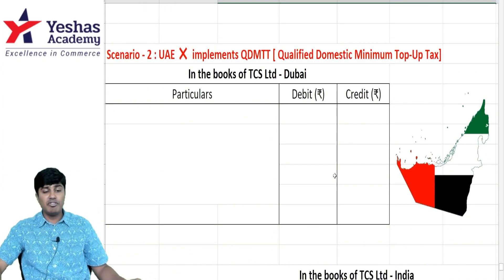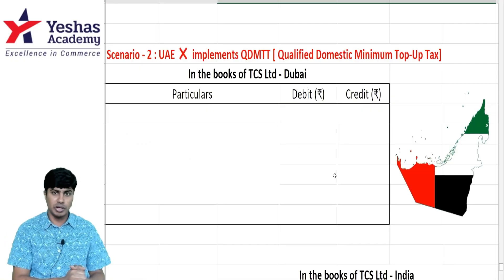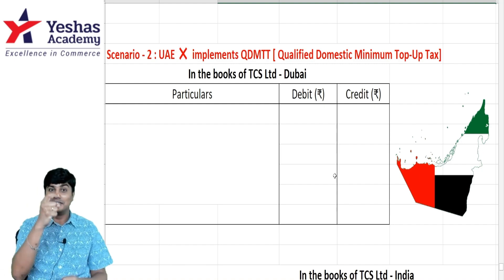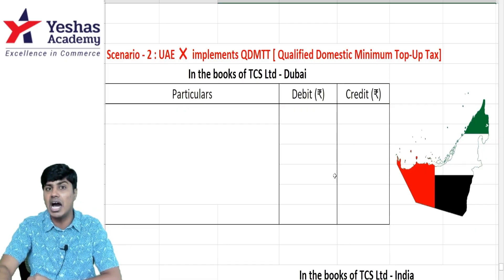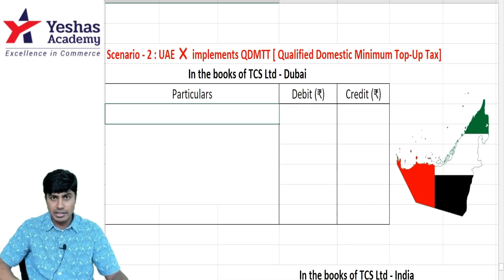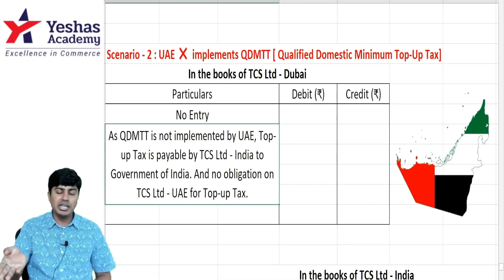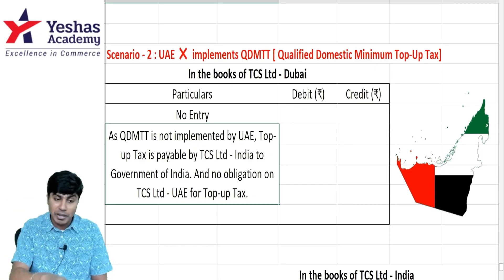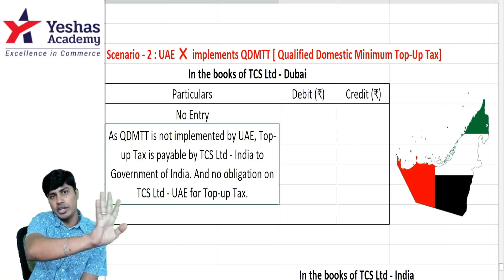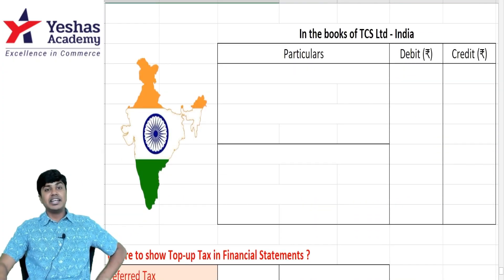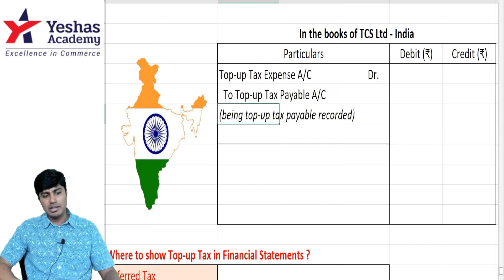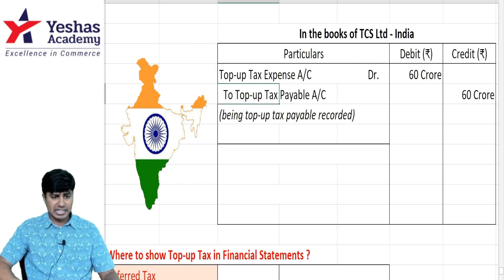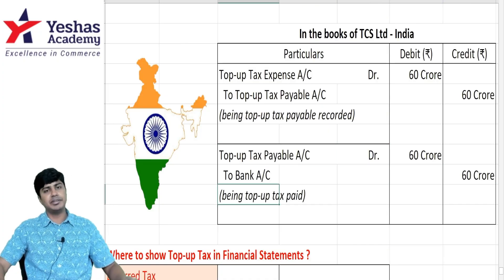Scenario two: QDMTT is not introduced by UAE. Then the UAE subsidiary writes no entry — top-up tax is not payable by TCS Limited UAE to the UAE government. Instead, the Indian government has the power to collect it from TCS Limited India. The entry in TCS India: Top-Up Tax Account Dr, Top-Up Tax Payable Cr — 60 crores. When paid: Top-Up Tax Payable Account Dr to Bank Account.